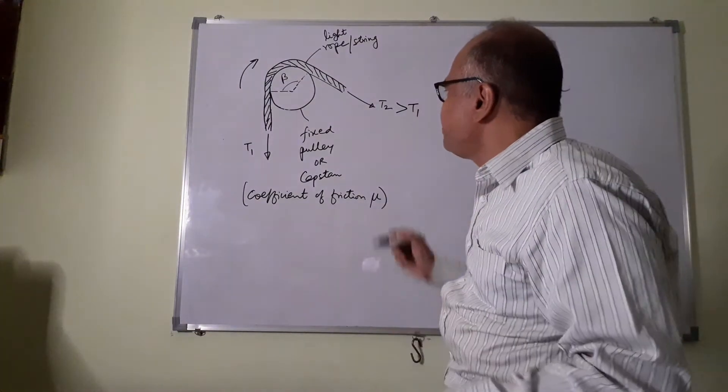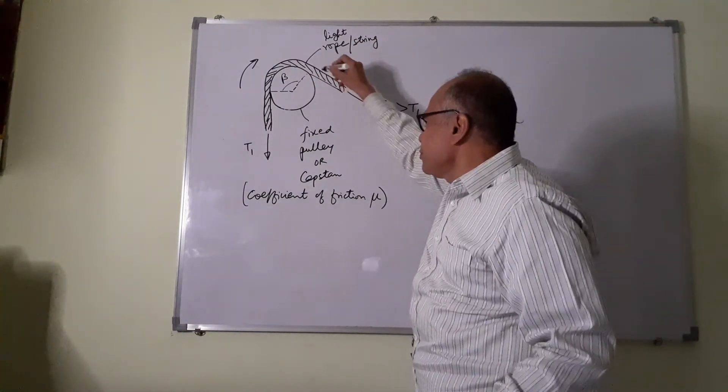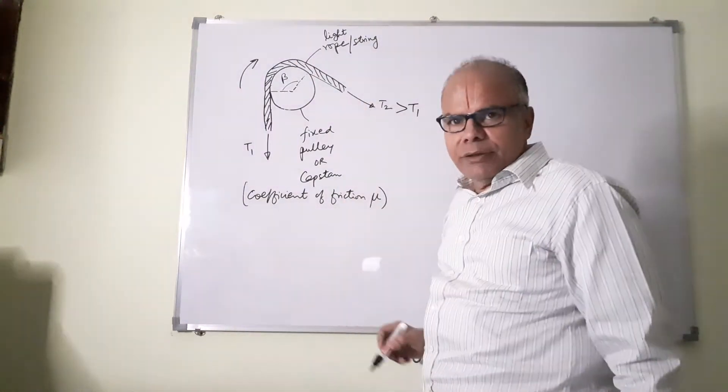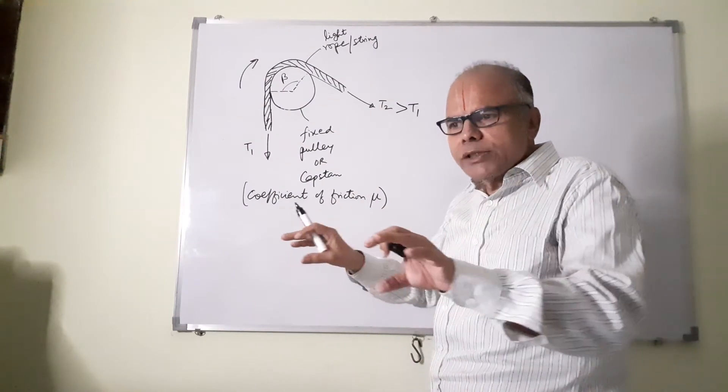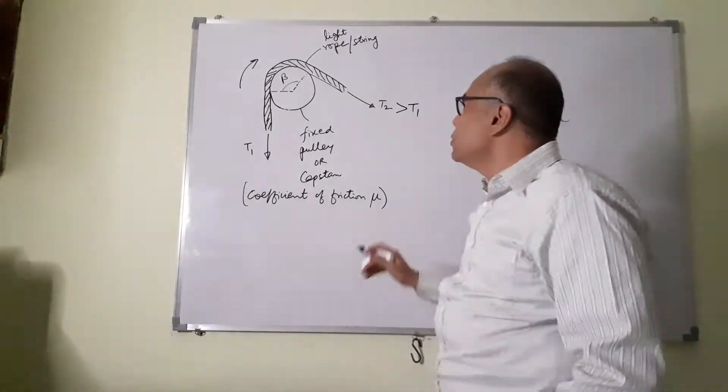We have here a fixed pulley, it's also called a capstan. A capstan is a long cylinder, vertical.